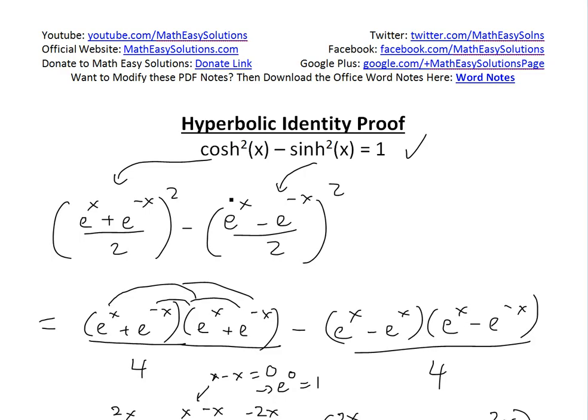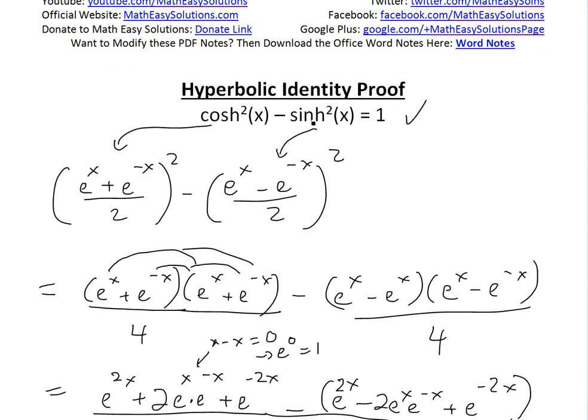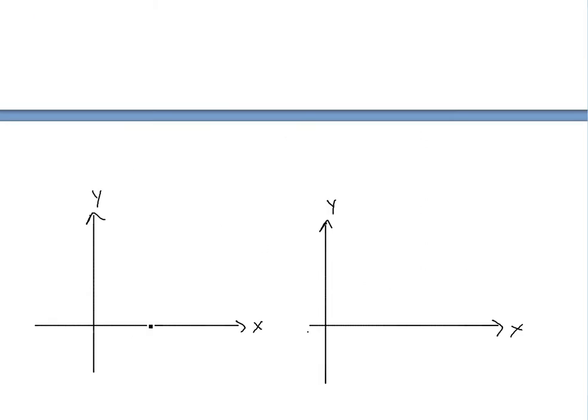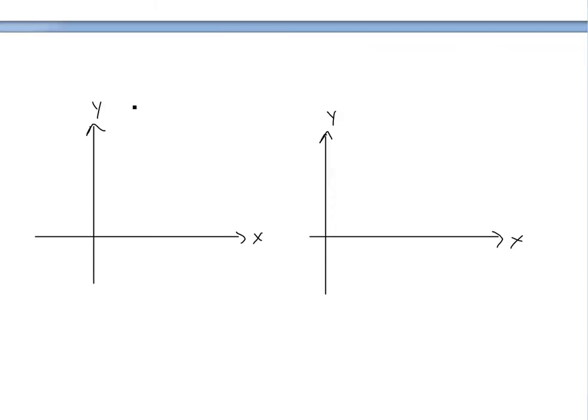Now just another side note. These are called hyperbolic functions because this function represents a hyperbolic function. If you have something like, actually I'll just graph it out here. So basically a hyperbolic function, if you have x squared minus y squared equals 1, like the one we have in this hyperbolic function, it's going to be graphed like this. And these are kind of how the graphs look like. So that's a hyperbolic function.